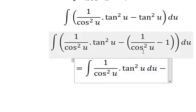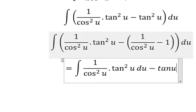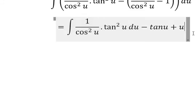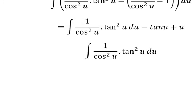We have 1 over cos u square and we will have the answer is tan u, and minus with minus gives us plus u. Now we need to do this integral. In this situation, we will use integration by substitution.